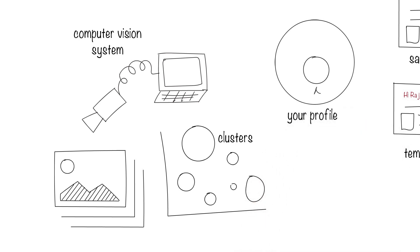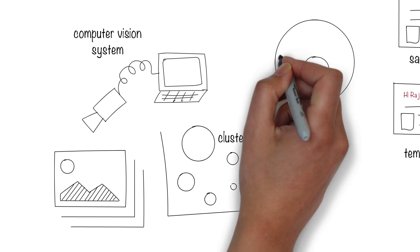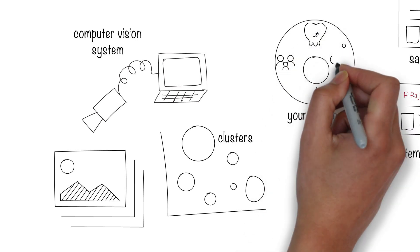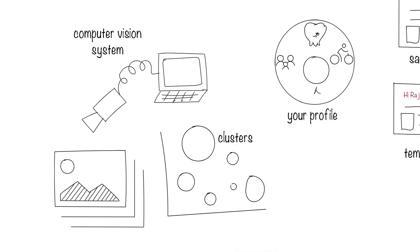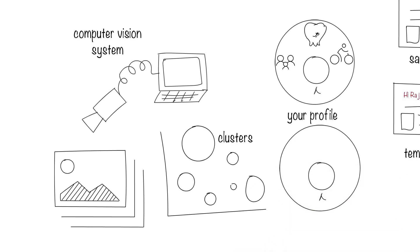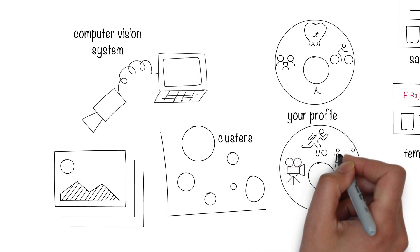Computer vision and machine learning might conclude that you like to spend time with your family, you have a sweet tooth, and you like bicycles, because the pictures on your phone capture that information. Or the AI system might conclude that you like to watch movies, play soccer, and eat out a lot.